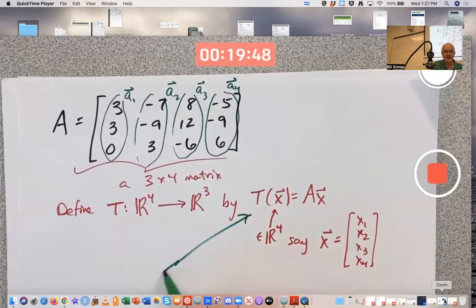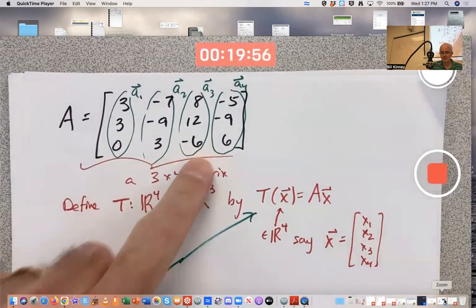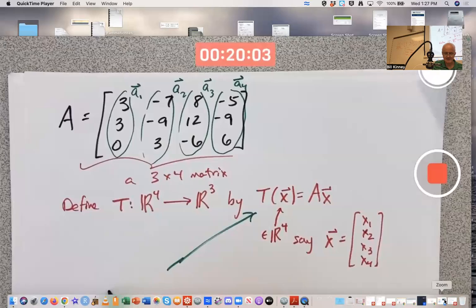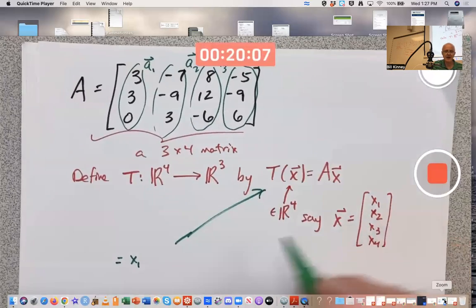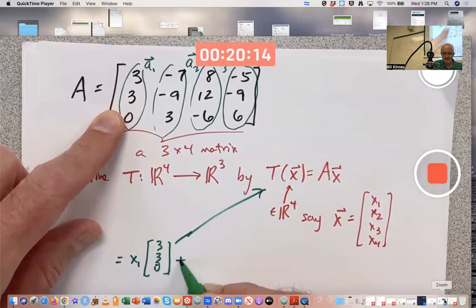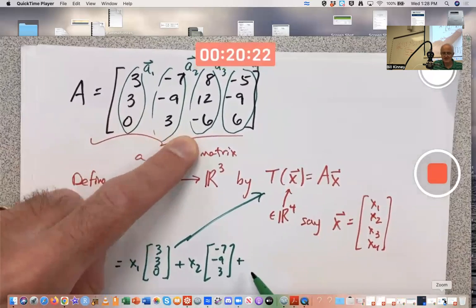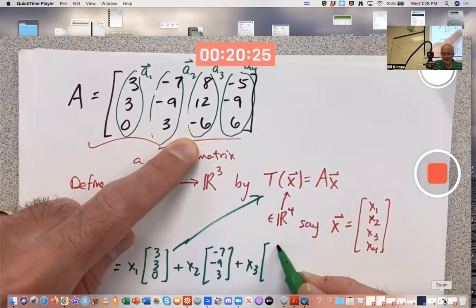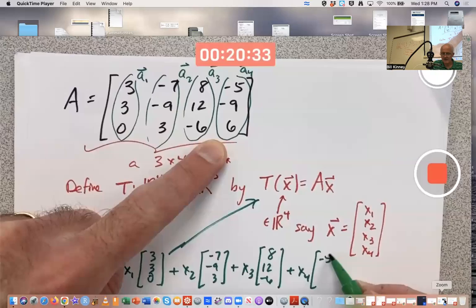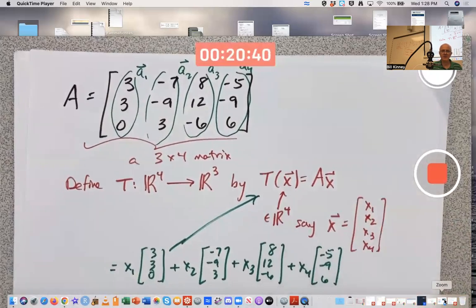By definition, just like on the test, a times x, which is T of x, is a linear combination of these columns with these entries, these components, as the coefficients or weights. T(x) equals a times x equals little x1, the first component, times a1, which is (3, 3, 0), plus x2 times a2 (-7, -9, 3), plus x3 times a3 (8, 12, -6), plus x4 times a4 (-5, -9, 6).